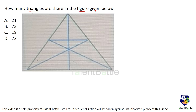How many triangles are there in the figure given below? One of the easiest ways to solve this is to simply count the number of triangles directly. I will name the smaller triangles: this entire part is A, this small triangle is B, then C, D, E, F, G, and H. Now I am going to count the triangles.